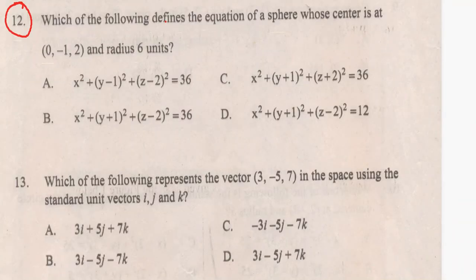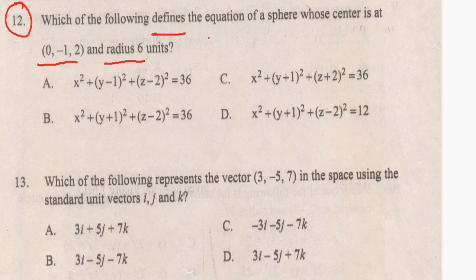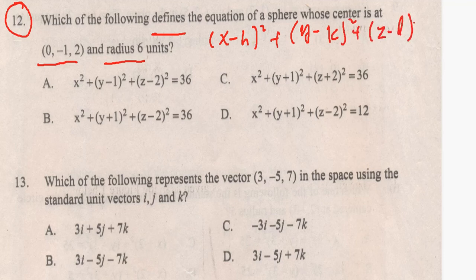Question number 12: which one of the following defines the equation of a sphere whose center is at (0, -1, 2) and radius 6? The equation of a sphere with center at (H, K, L) is: x minus H squared plus y minus K squared plus z minus L squared equals the radius squared.